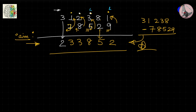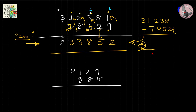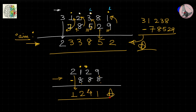Example: 2129 minus 888. Identify problem digits: all three bottom digits (8, 8, 8) cause trouble. Reduce the leading digit 2 to 1. Then: 10−8=2, 9−8=1 (from 9), 10−8=2. Wait — the last 8 is last so 10−8=2, and the others from 9: 9−8=1, 9−8=1. Prepend reduced leading digit: answer is 1241. You can verify: 2129 − 888 = 1241.